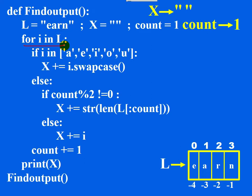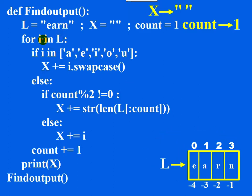For I in L — L is a string. 'For I in L' means I contains each and every character of L one by one. Take the first character of L, that is small 'e'. Now your variable I contains small 'e'.